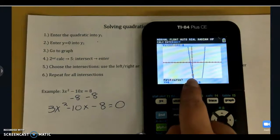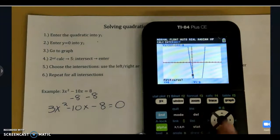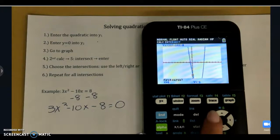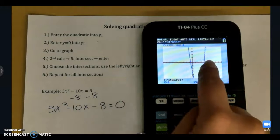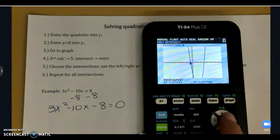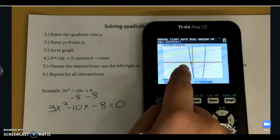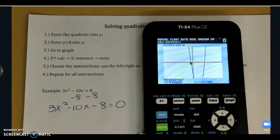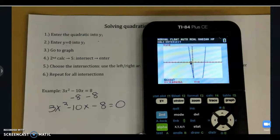Now, the little blinking black dot is what you are going to move with your left and right arrows. Our graphs intersect at two points, so we need to find both. First, you're going to scroll over close to where they intersect, and then you're going to press enter three times. 1, 2, 3.